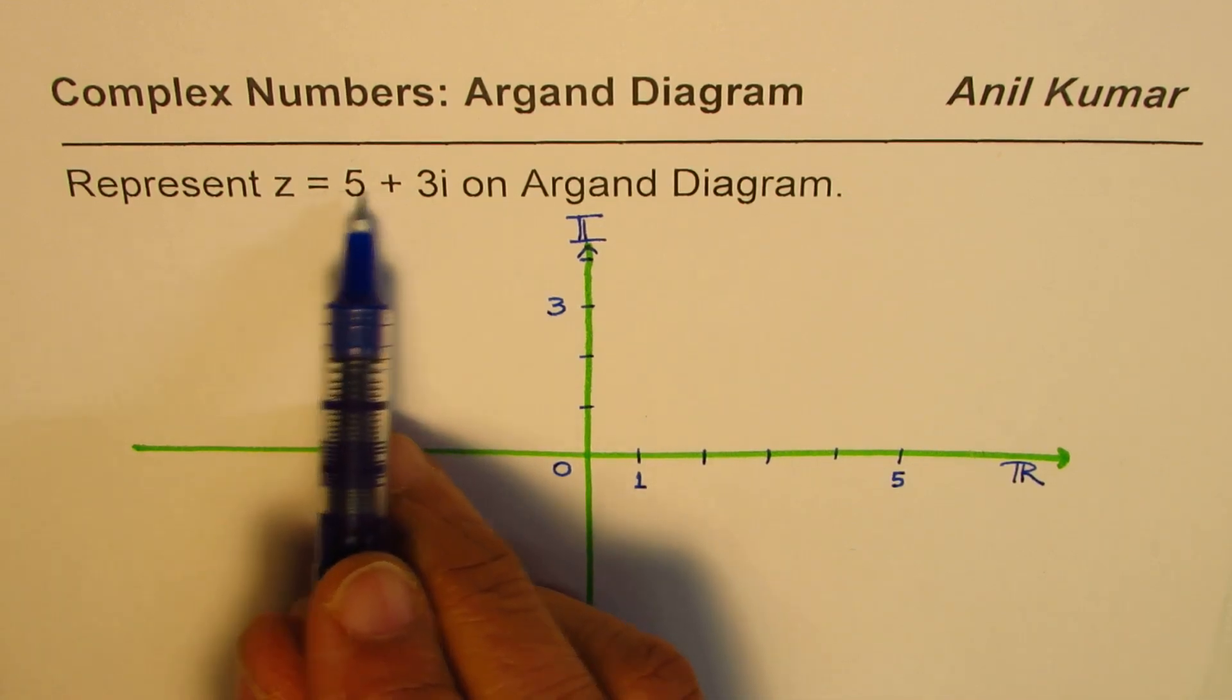On the imaginary side, let's say 1, 2, 3, 4 - so this mark is third and this is the 0 for us. So 5 plus 3i will be - we have to move 5 units towards the real side.